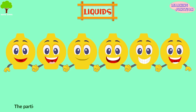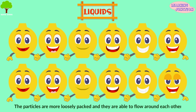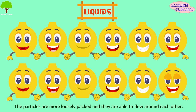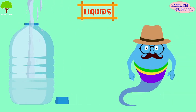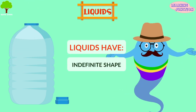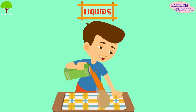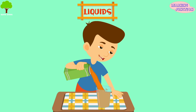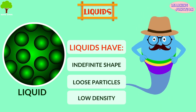Liquids. In a liquid state, the particles are more loosely packed and they're able to flow around each other. This gives the liquid an indefinite shape; therefore, the liquid will comply to the shape of its container. Because the particles are loosely packed, liquids have low density.